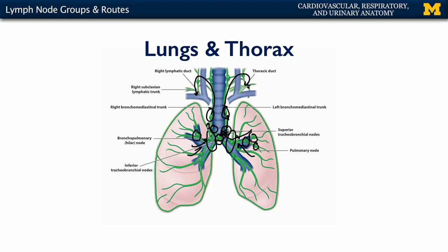This would be the progression of a metastasis that originated within the lungs: first the pulmonary nodes, then the hilar nodes, then the tracheobronchial nodes — either inferior or superior — then the bronchomediastinal trunks, and then into the ducts.